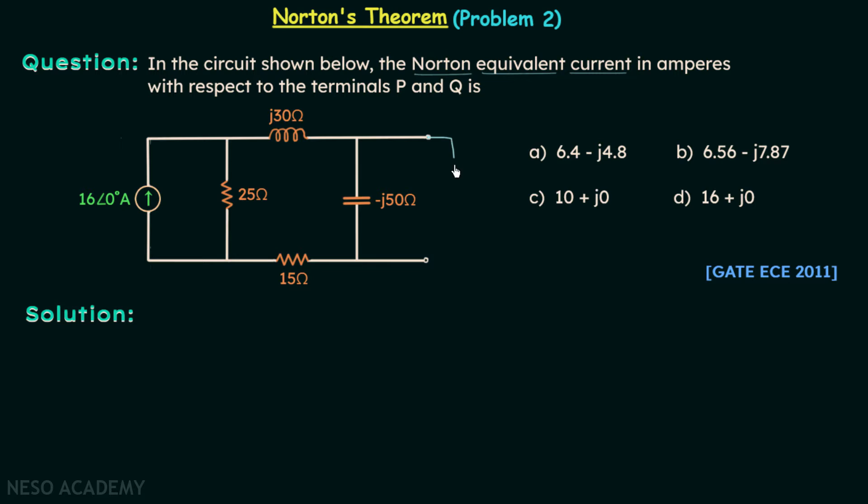We will short circuit them, and the short circuit current is our Norton's equivalent current. We want to find out this current in this network.